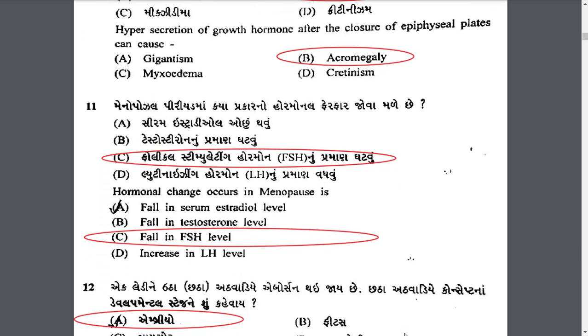What hormonal change is seen in menopause period? The hormonal change that occurs in menopause is a fall in follicle stimulating hormone (FSH).